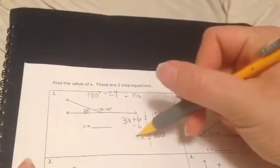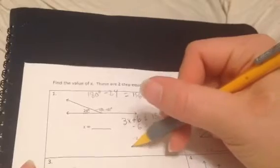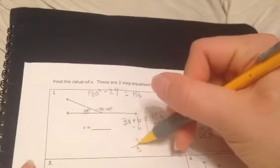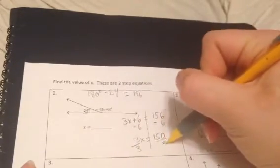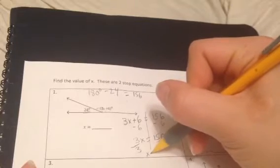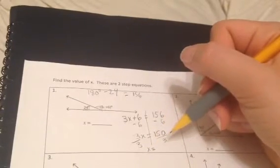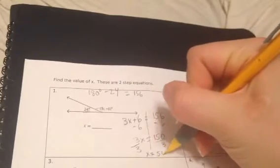So then last step, because we have 3 times x, we'll divide both sides by 3. Which then gives us x equals 150 divided by 3, which is then 50.